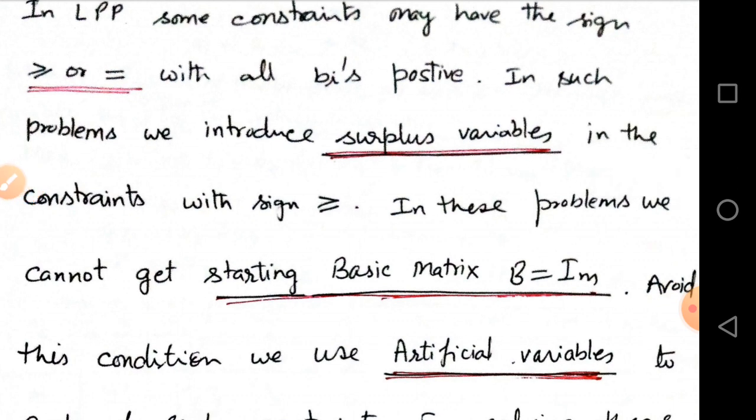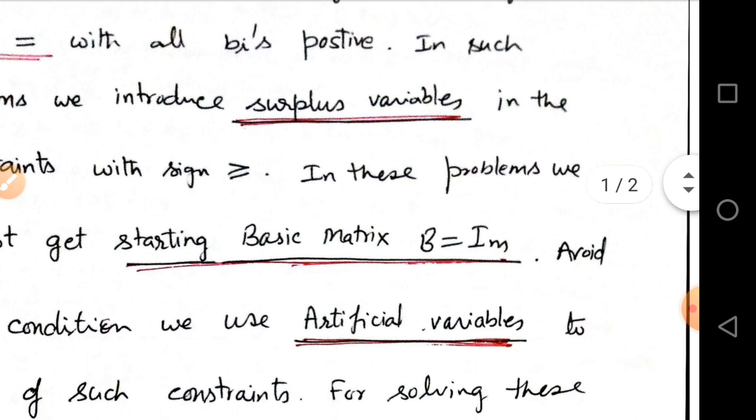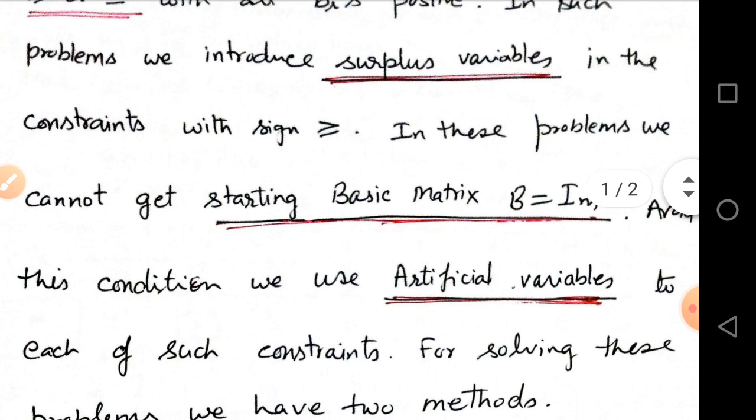For making basic matrix B equal to I_m, we need sometimes artificial variables.